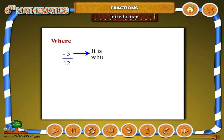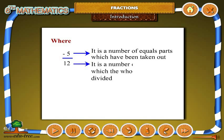Where five is the number of equal parts which have been taken out. Twelve is the number of equal parts which the whole has been divided.